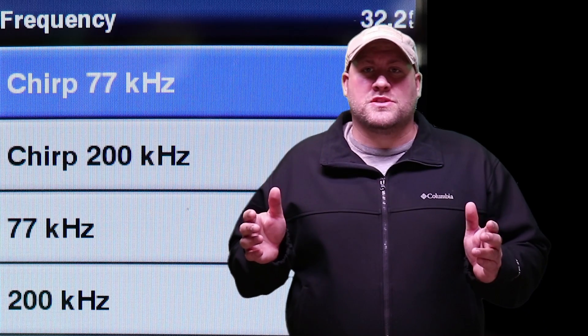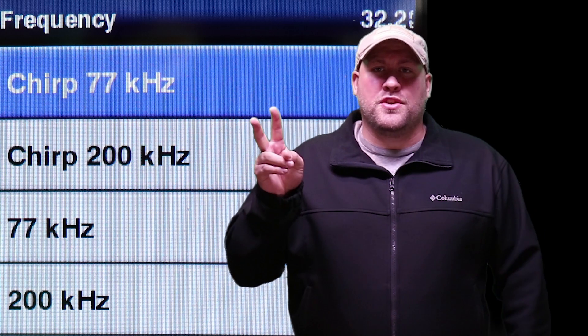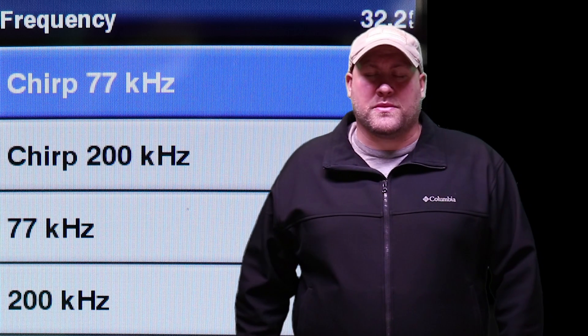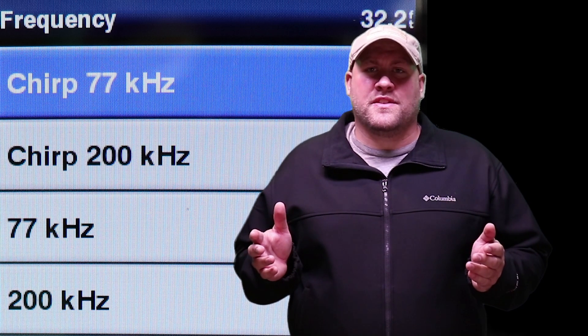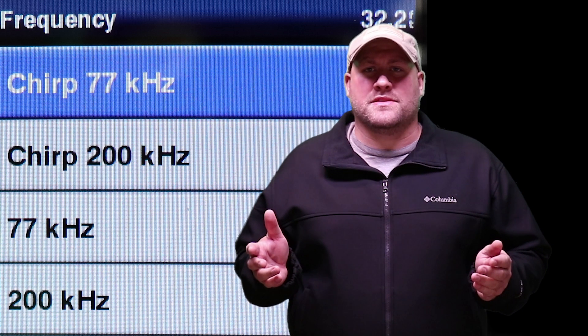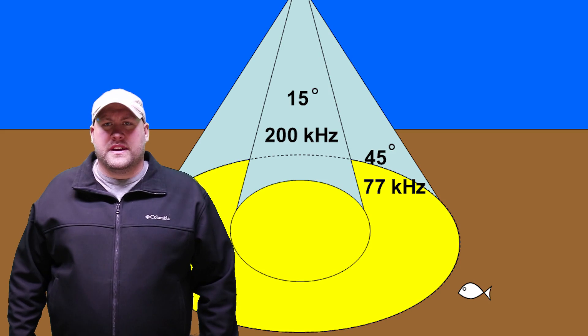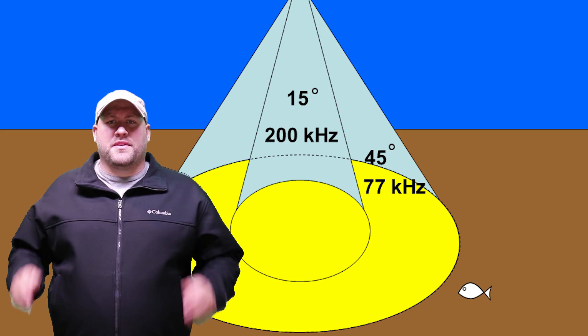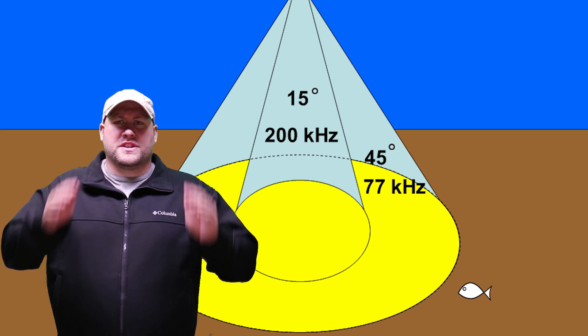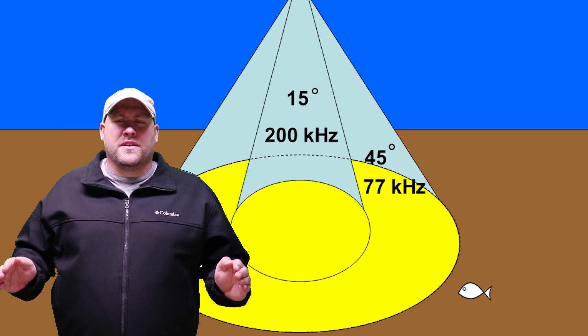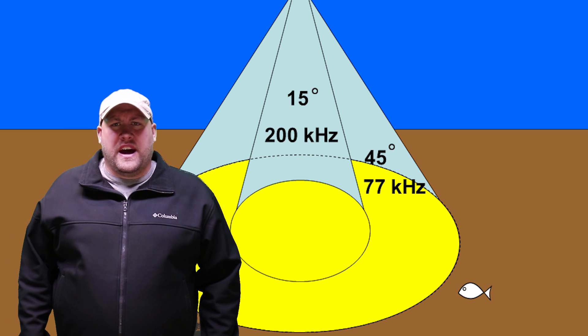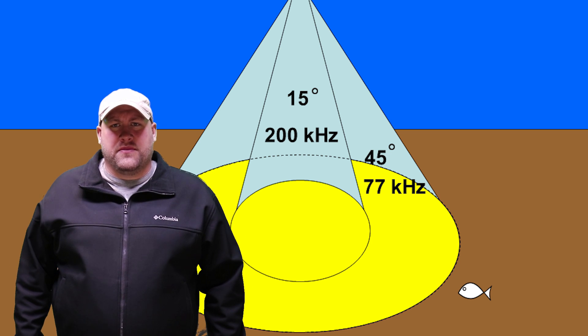Now with the Striker 4 you have two options for frequency: the 77,000 hertz frequency and a 200,000 hertz frequency. The frequency that you choose is going to be a direct correlation to the cone of view that you're going to have with your sonar.